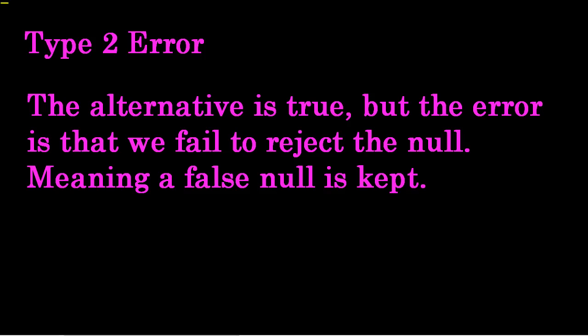So really take time to study and make sure you remember what type 1 error is and a type 2 error is. Easiest way to remember it is a type 1 error. The null is true, but the error is we don't see that. Type 2, the alternative is true, but the error is we keep a false null.